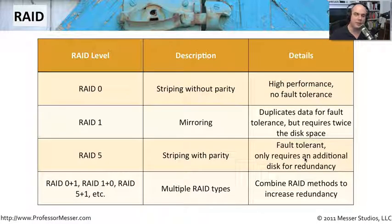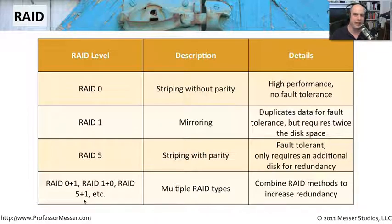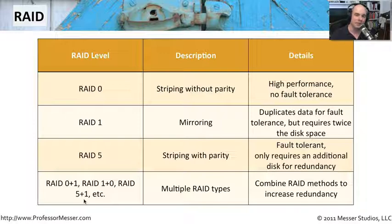Occasionally you'll see RAID systems combined together. You might have striping without parity but mirror that striping, or mirror data and stripe it with parity. You'll often see RAID 0+1 or RAID 5+1, where you perform striping with parity and mirroring at the same time. There's a lot of flexibility in combining these approaches, so when building file systems in your servers, check what RAID options are available to you.